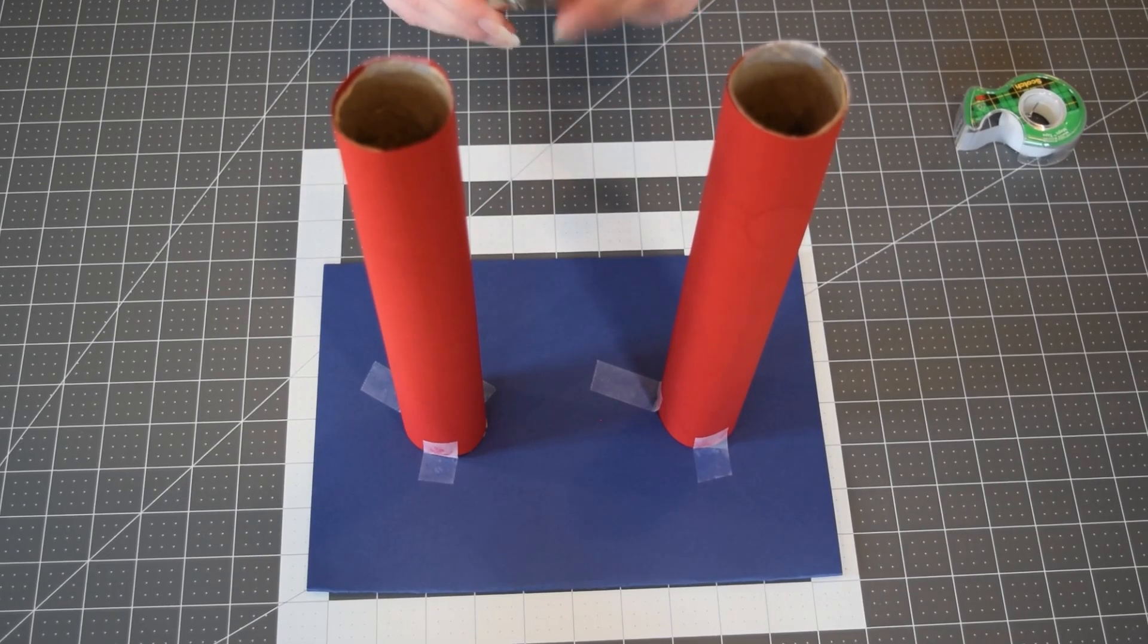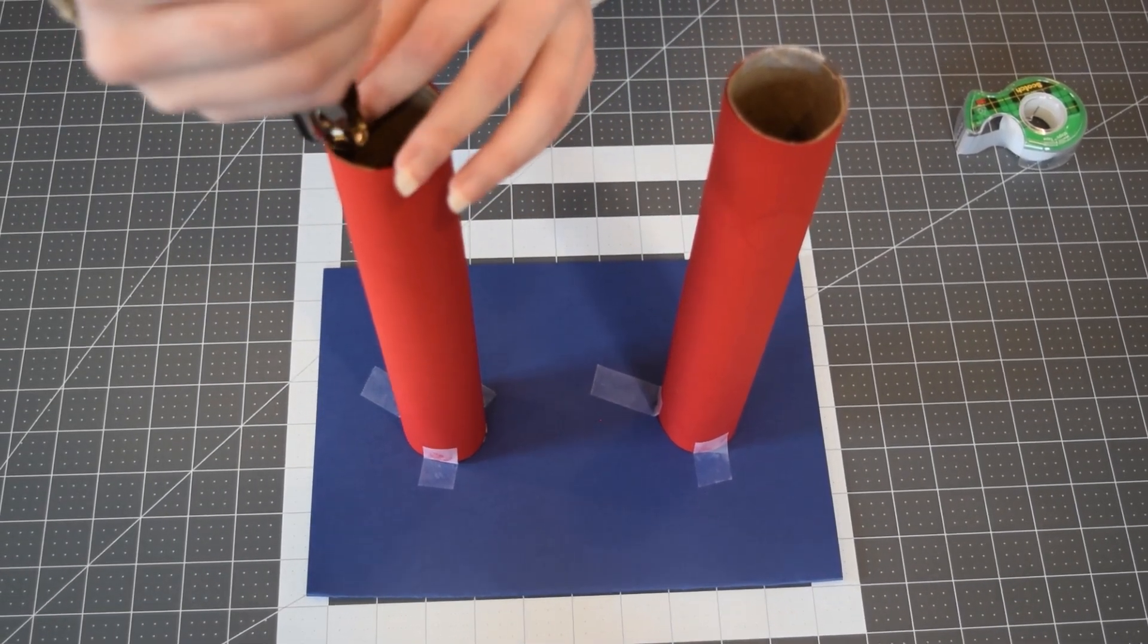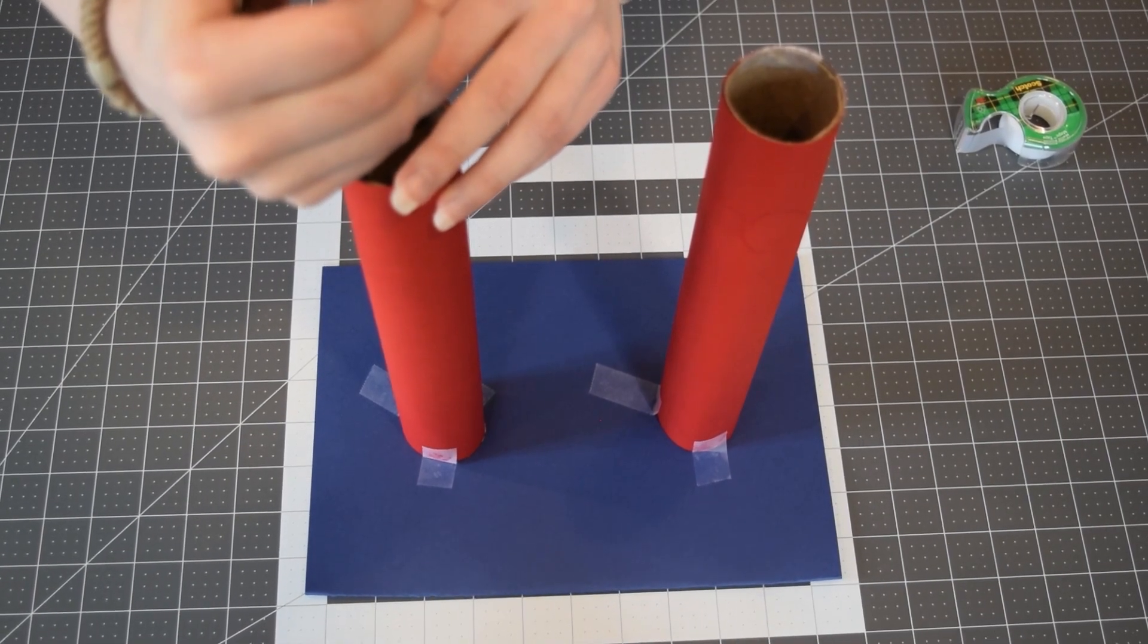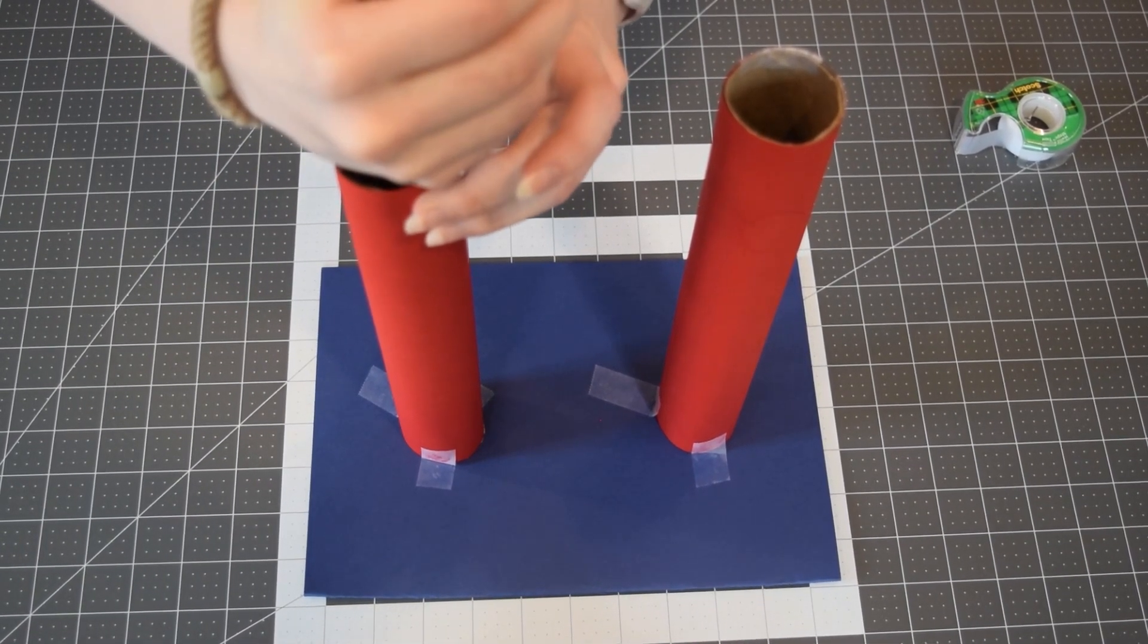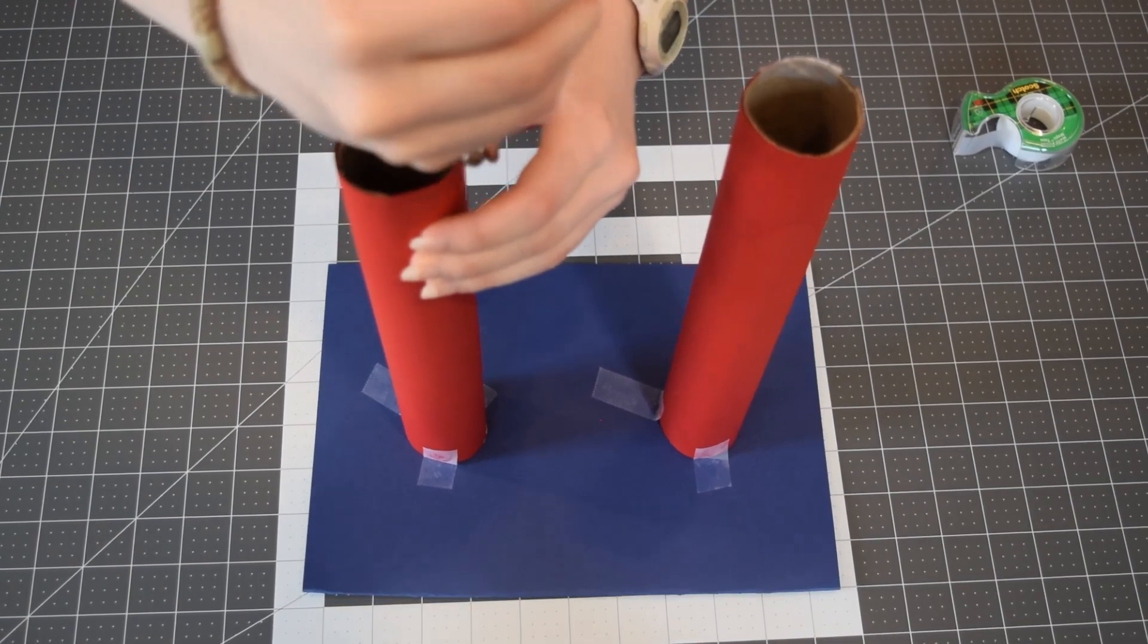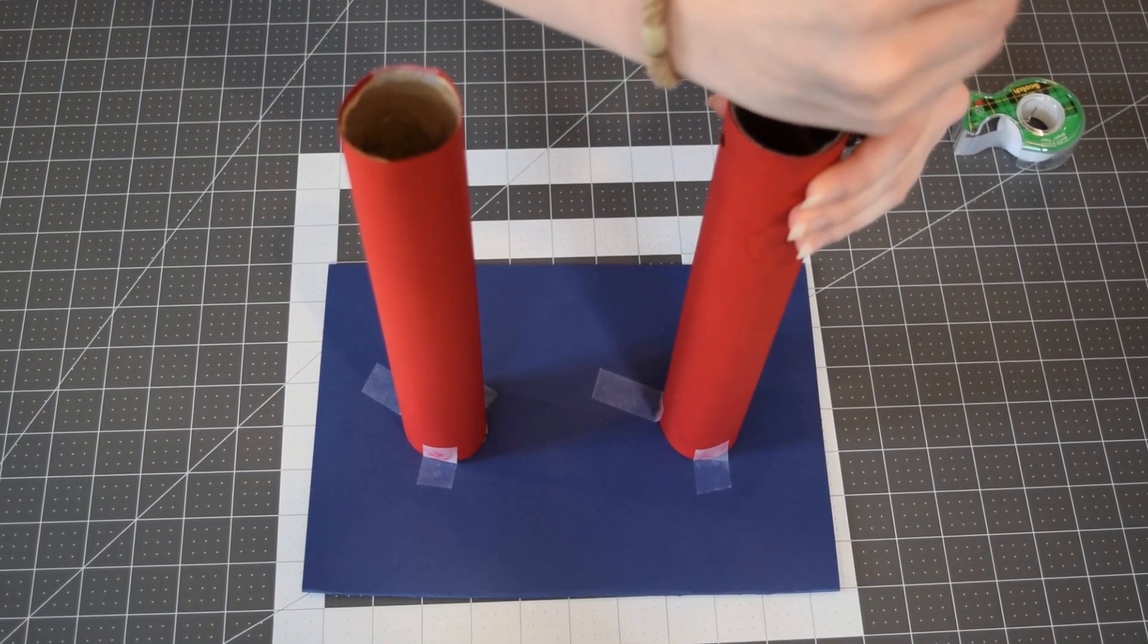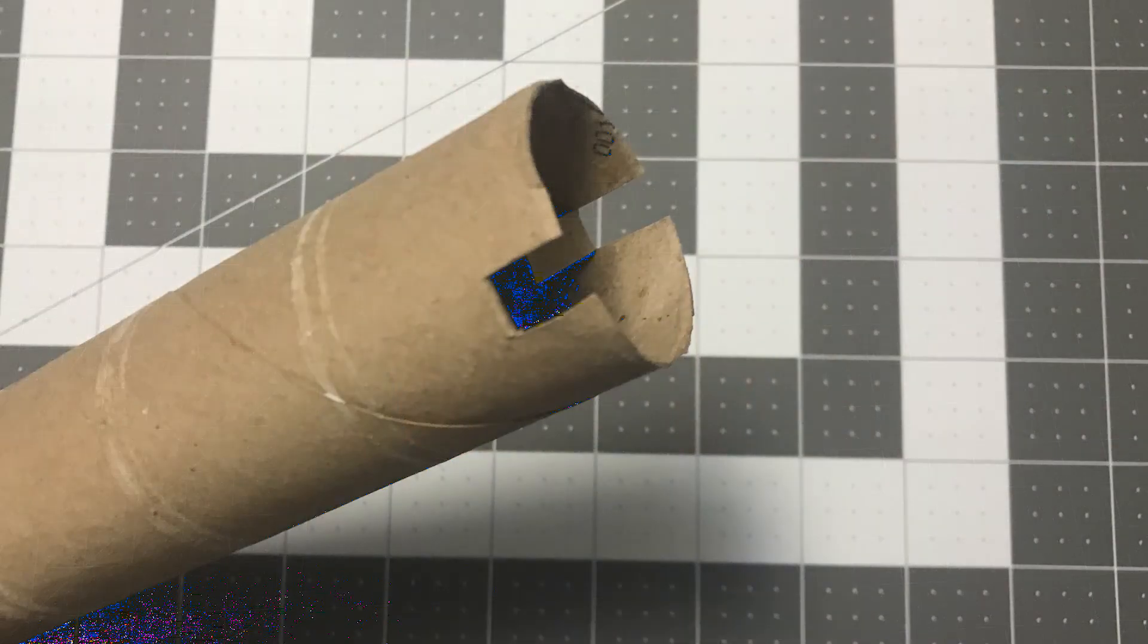Next, I'm going to take my hole puncher and punch holes on either side of the tube, about half an inch from the top, to put my chopstick through. If you don't have a hole puncher, you can use scissors to create a notch that looks like this in the top of each tube, and that'll work just fine.